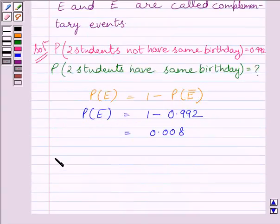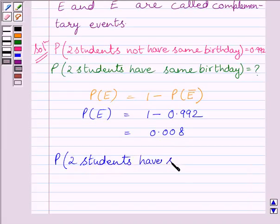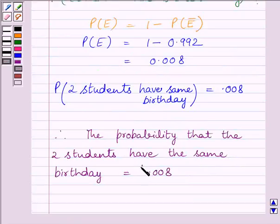So we get probability of two students having the same birthday is equal to 0.008. This is our required answer.